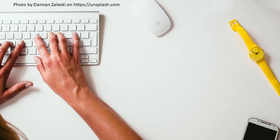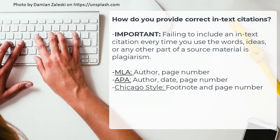How do you provide correct in-text citations? Your bibliography or list of sources is not enough by itself to provide full documentation of your sources. While it tells your reader what sources you used, it does not tell your reader which specific words, ideas, or other materials in your project came from which of the sources you listed. That's where in-text citations come in. Important: failing to include an in-text citation for source material is a form of plagiarism.